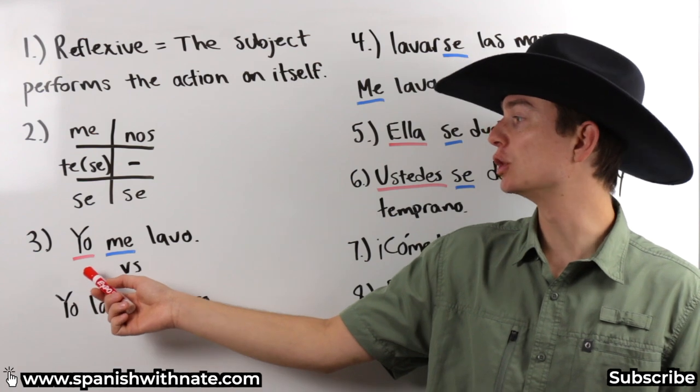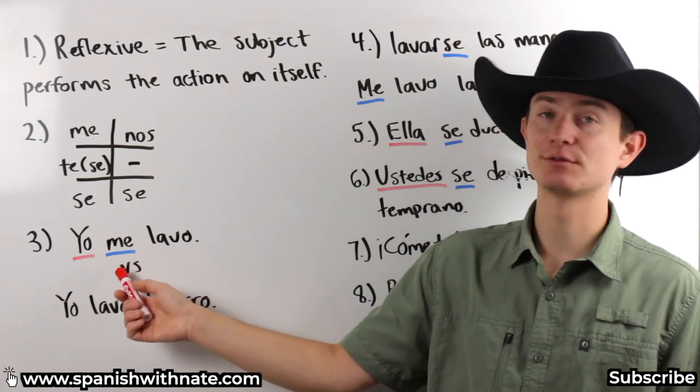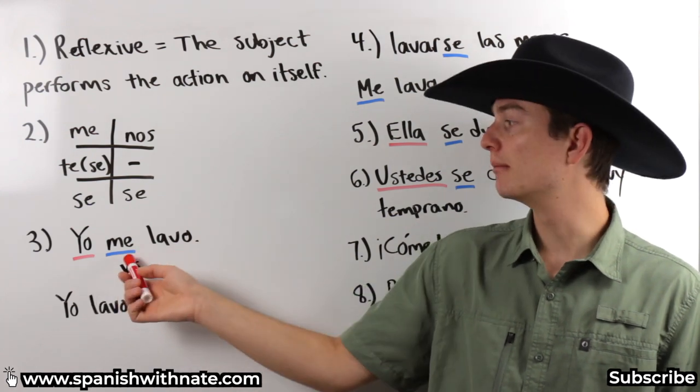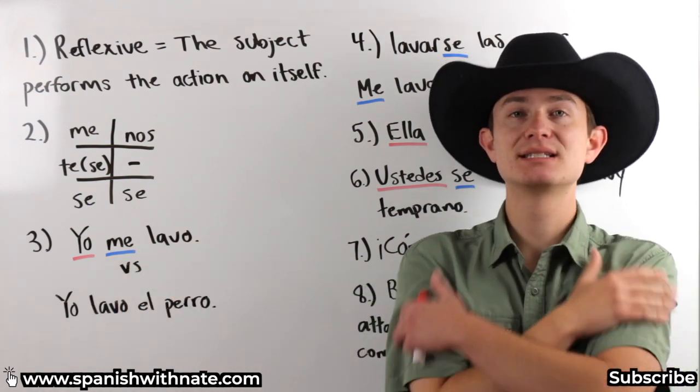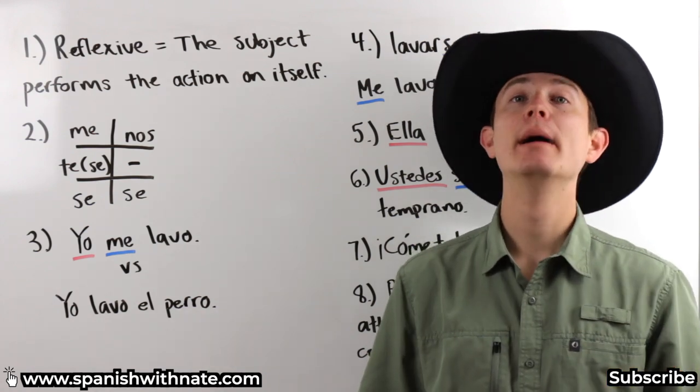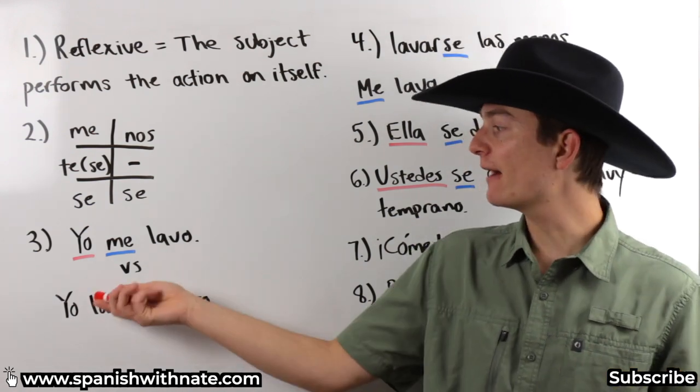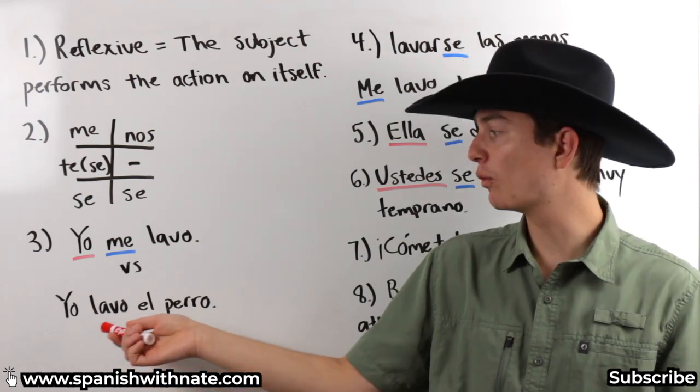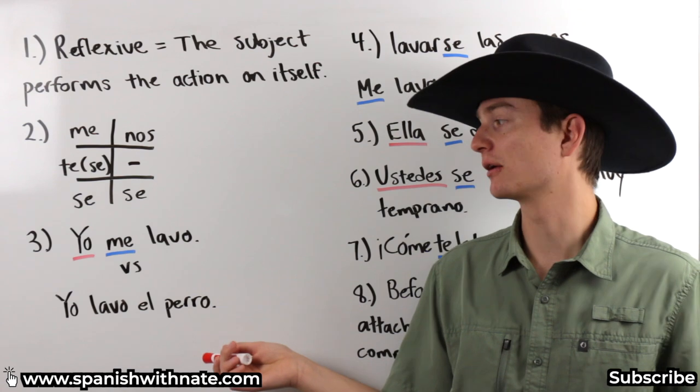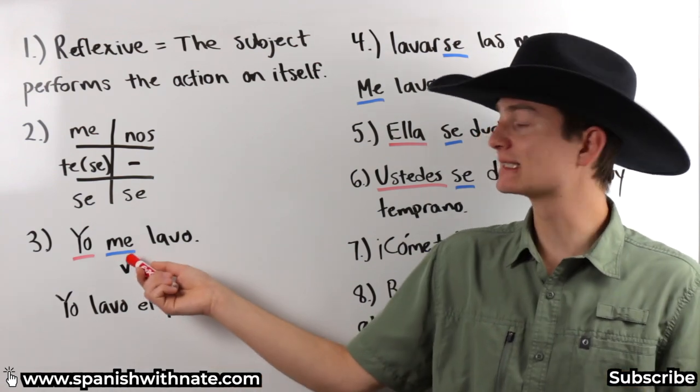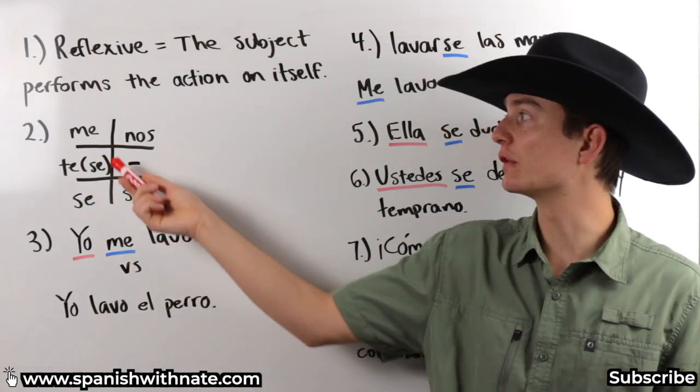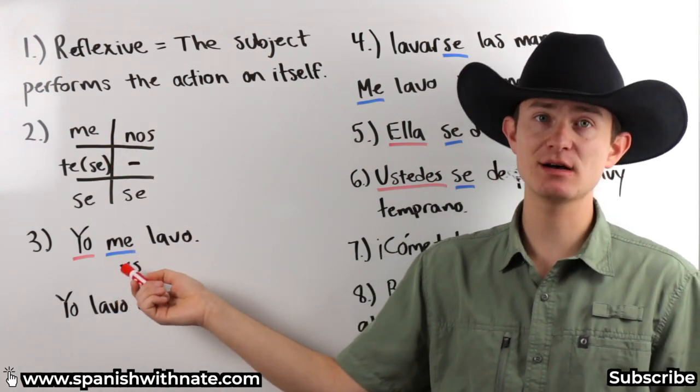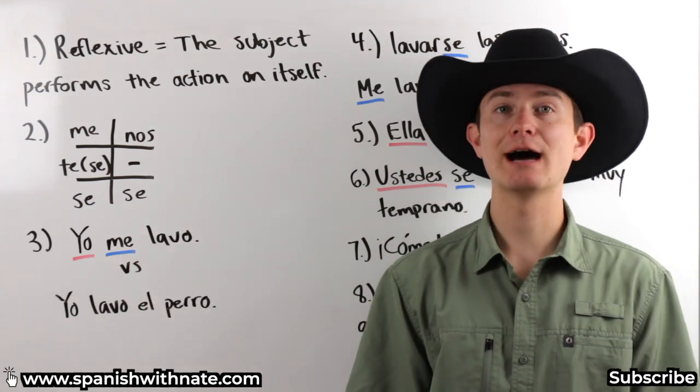For example, yo is the subject here, me is the reflexive pronoun, and lavo is our verb. Yo me lavo. I wash myself. I wash me. If I just say yo lavo, we don't know what I'm washing.